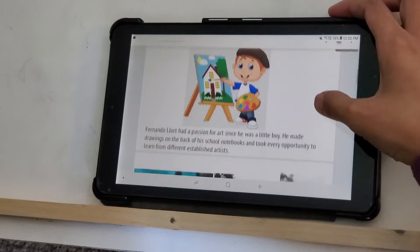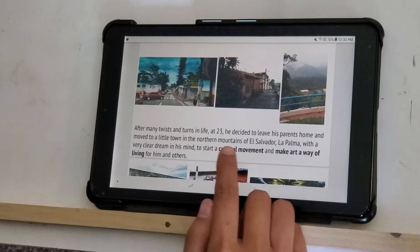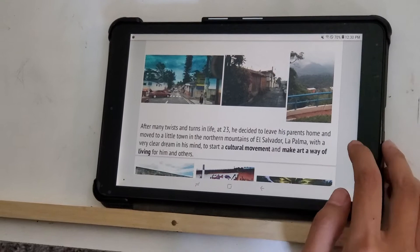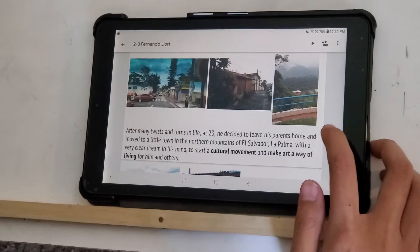And after many twists and turns in life, at the age of 23, he decided to leave his parents' home and moved to a little town in the northern mountains of El Salvador called La Palma. With a very clear dream in his mind, which was to start a cultural movement and make art a way of living for him and others. So art was something that he really loved and he had a passion for. And he wanted to spread and share that passion with others and be able to make a living doing art.